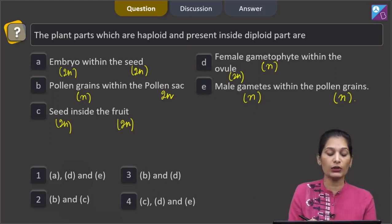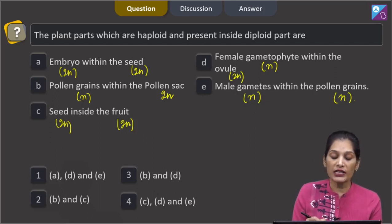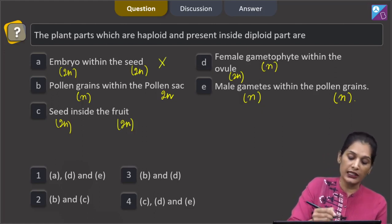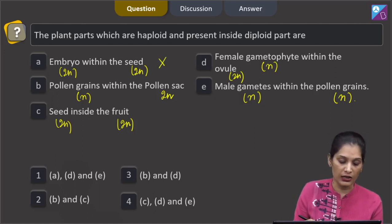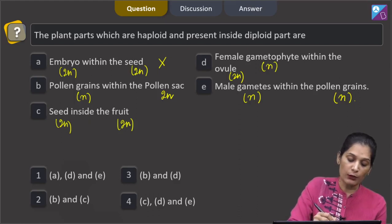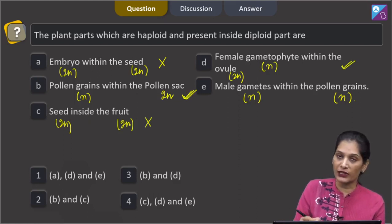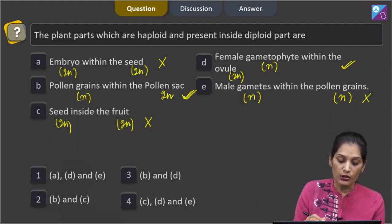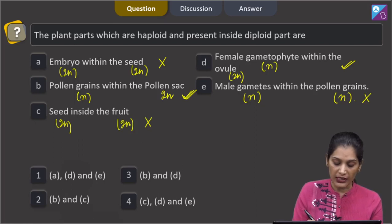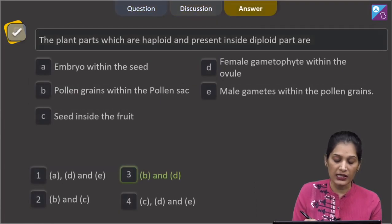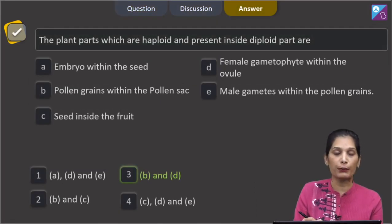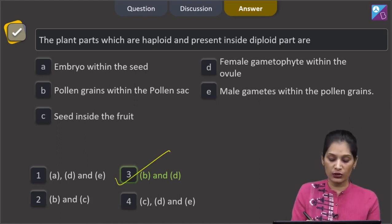Now, the question is asking about the haploid structures present inside the diploid. It is both diploid, so this option is ruled out. Pollen grains within the pollen sac, haploid within the diploid, yes. Both diploid ruled out. It is also correct as haploid within the diploid. E, both are haploid. So D and B. The correct option for the given question is option 3, that is B and D.